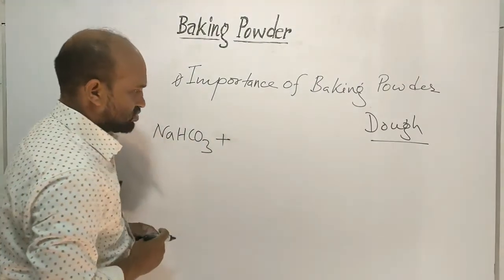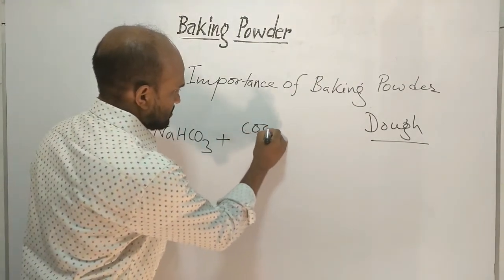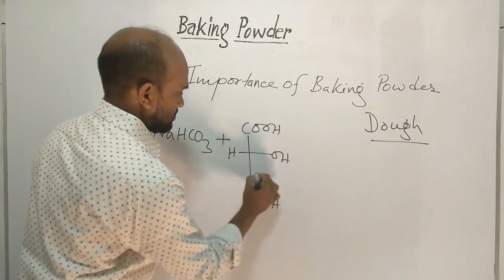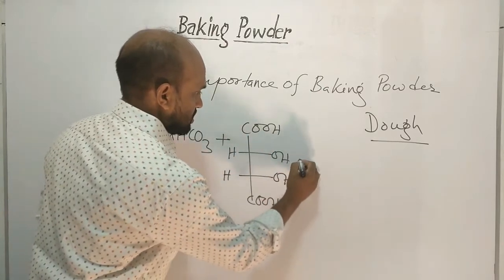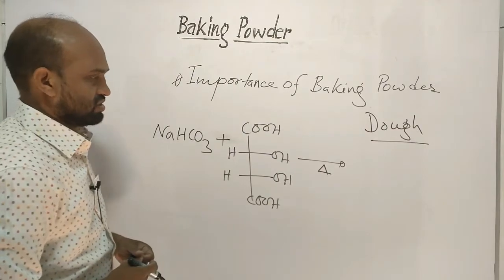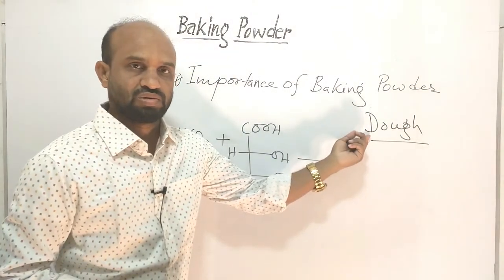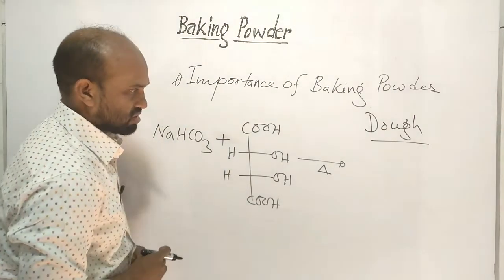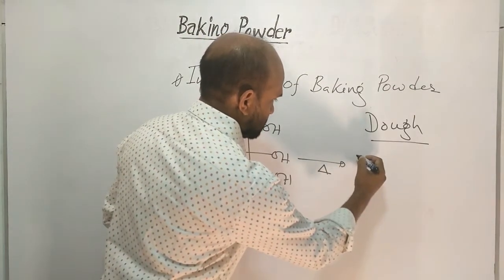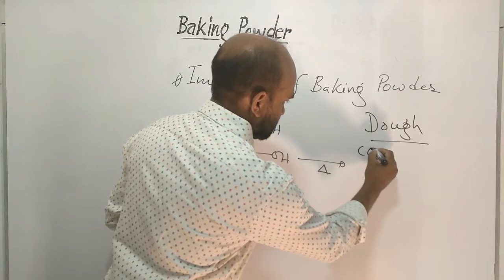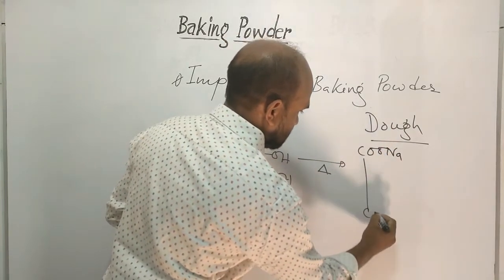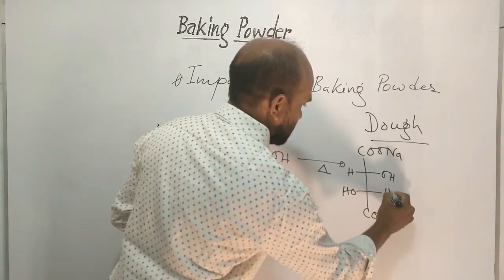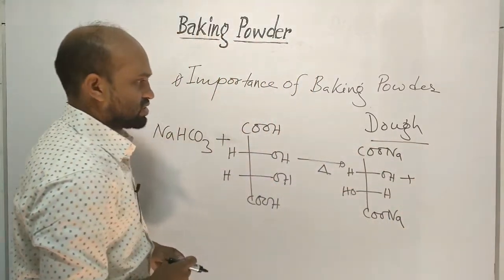In this reaction, sodium bicarbonate (baking soda) is added to tartaric acid, and this mixture is heated with dough. Sodium bicarbonate reacts with tartaric acid to form sodium tartrate salt (COONa-COONa with OH groups). This is sodium tartrate salt.